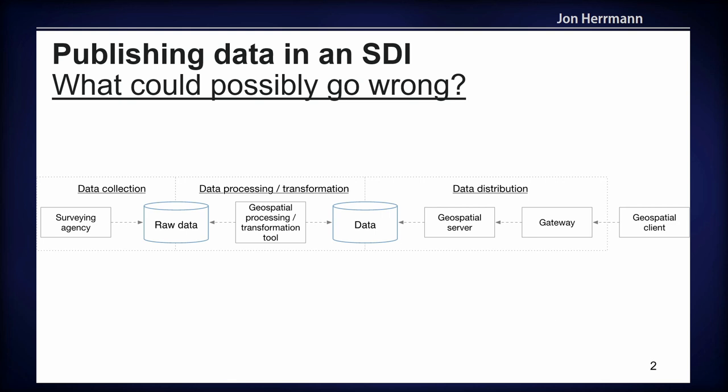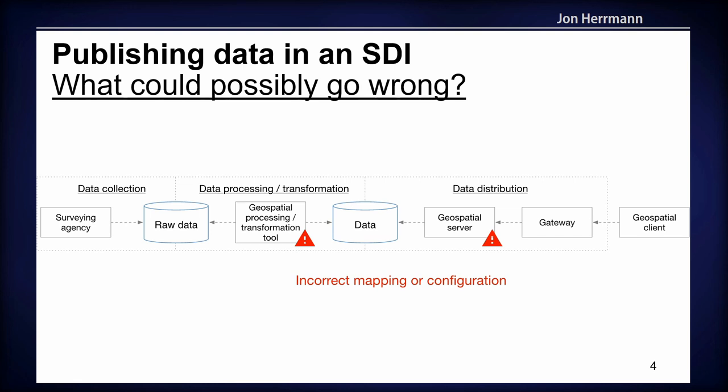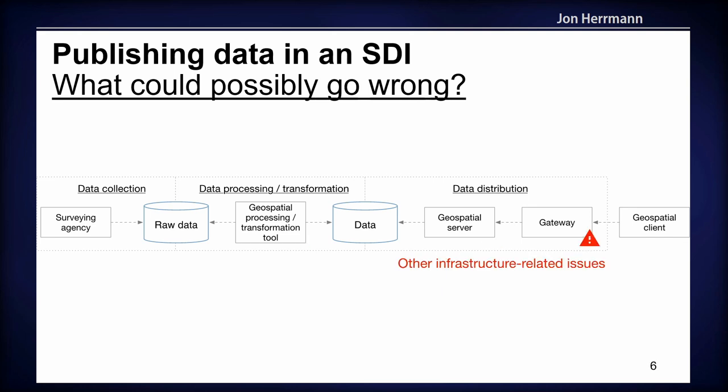If you imagine a simple process where data is collected, processed, and distributed — what could possibly go wrong? Well, there are a lot of places where bad things can happen. For instance, you received incorrect data, you created an incorrect mapping or configuration, you have software defects, or you have other infrastructure-related issues.